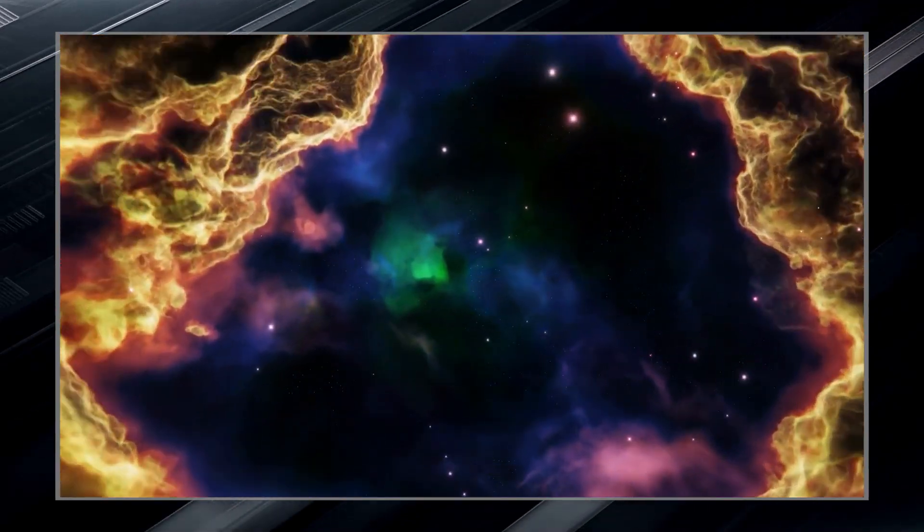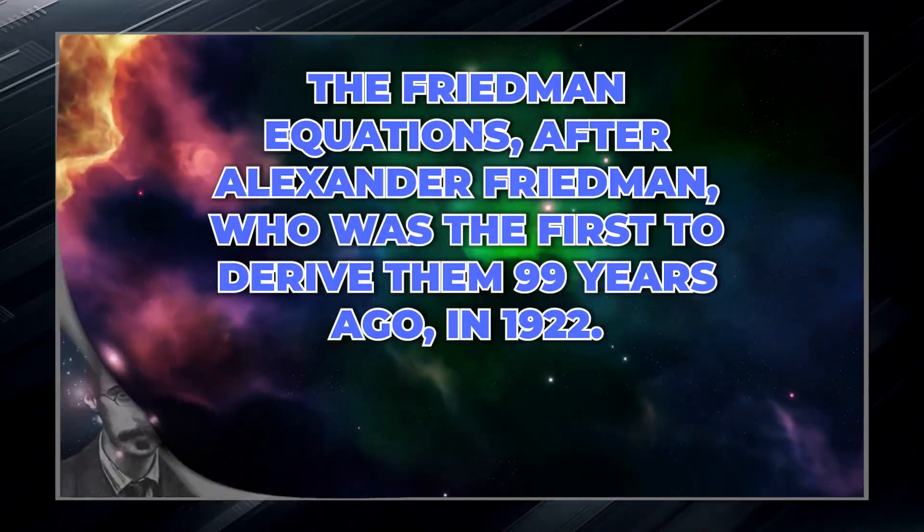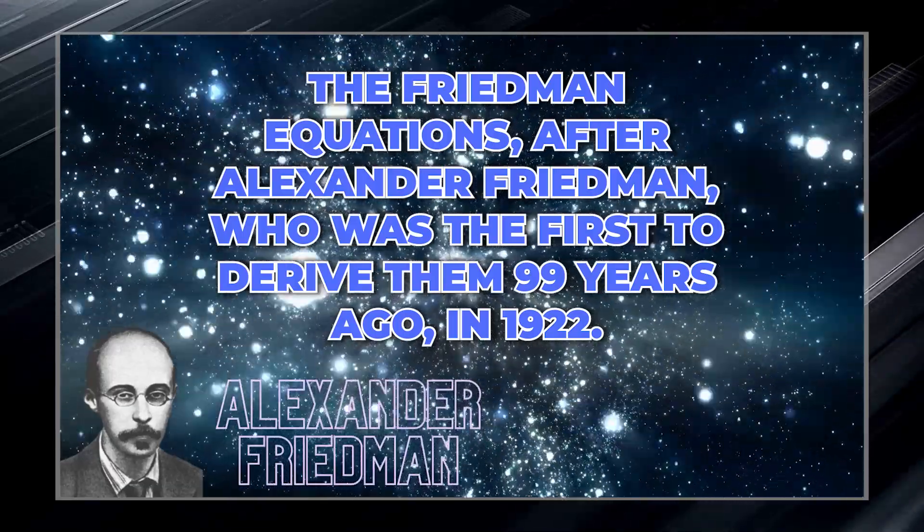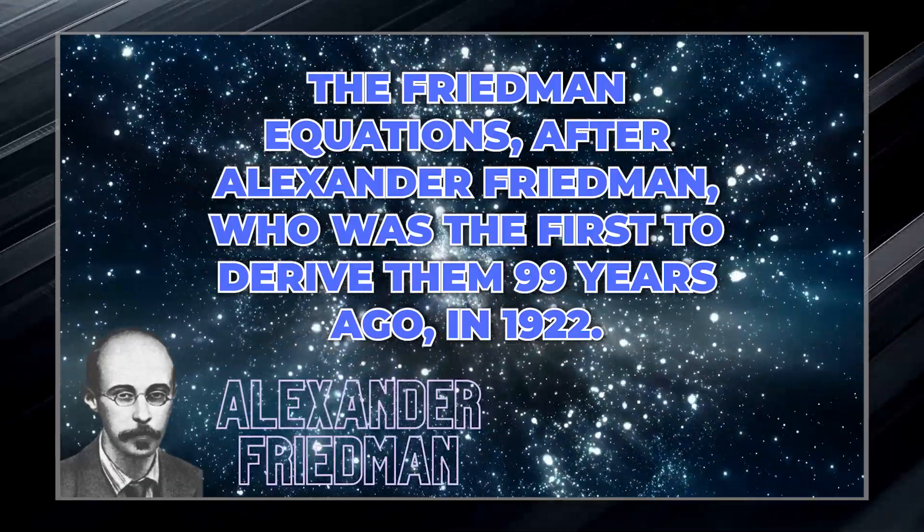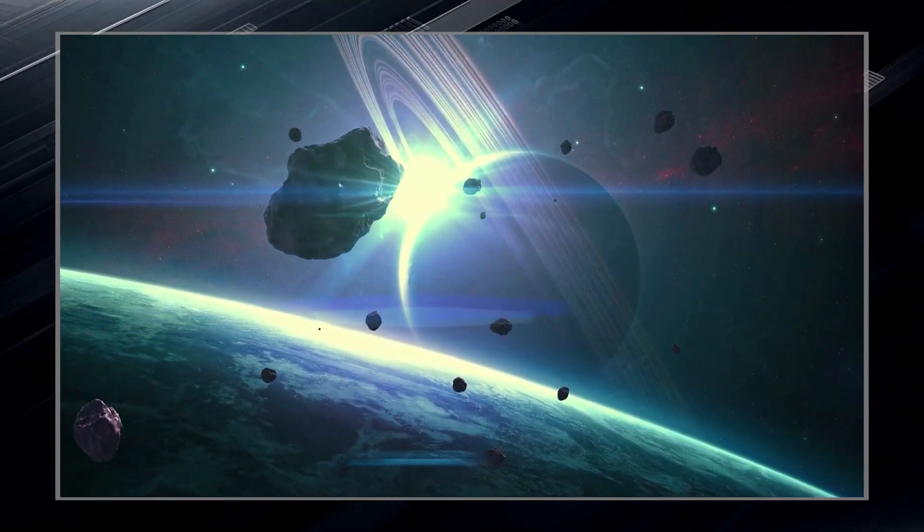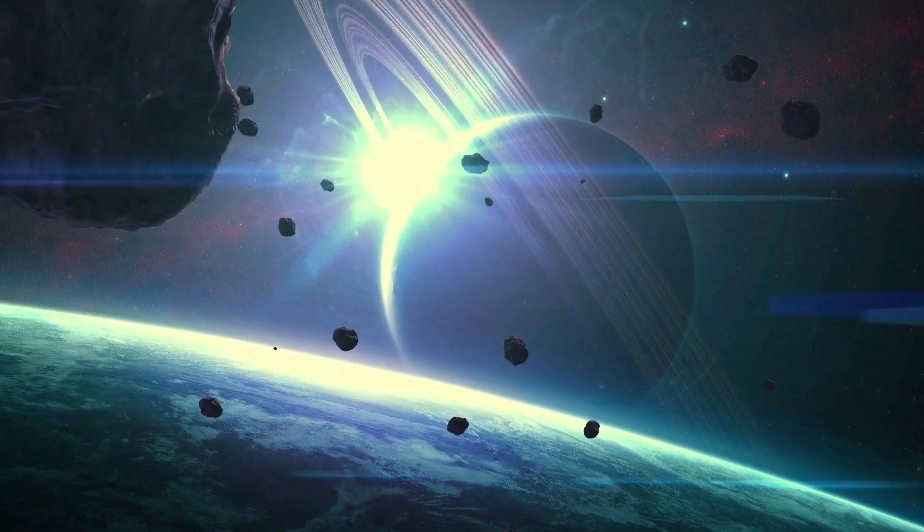The consequences of this resolution are known as the Friedmann equations, after Alexander Friedmann, who was the first to derive them 99 years ago in 1922. These equations tell us that a universe full of stuff must expand or contract in a particular way.